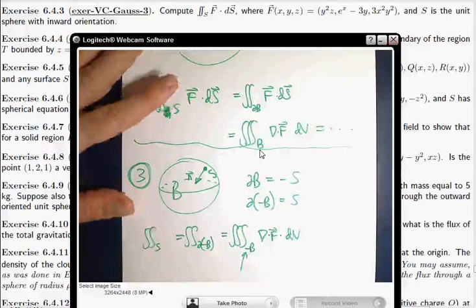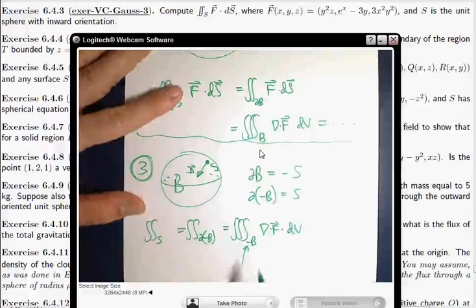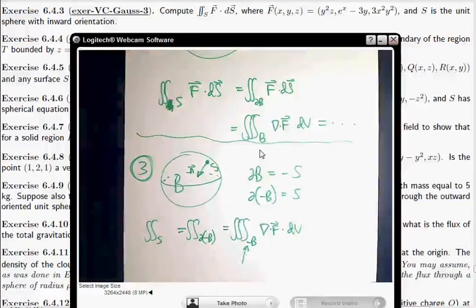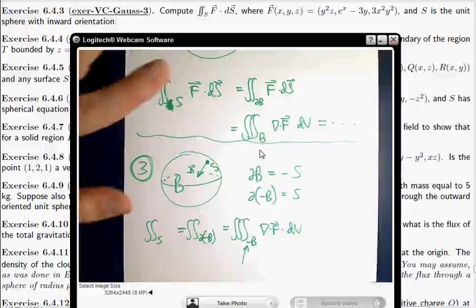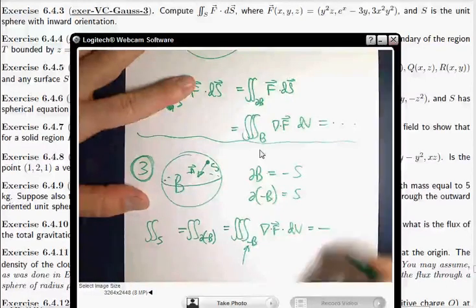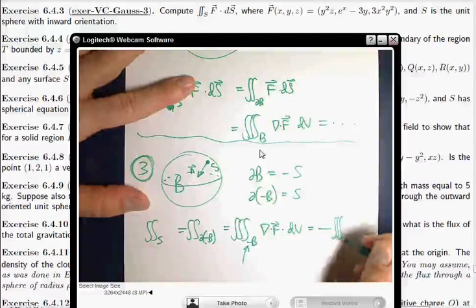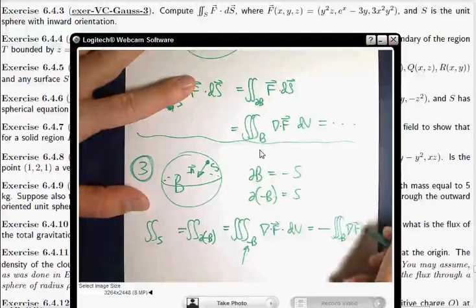And what that minus sign means, remember, this is an orientation. And orientations are conventions regarding sign in the evaluation. So this is just plain old negative triple integral over B, divergence F dot dS.